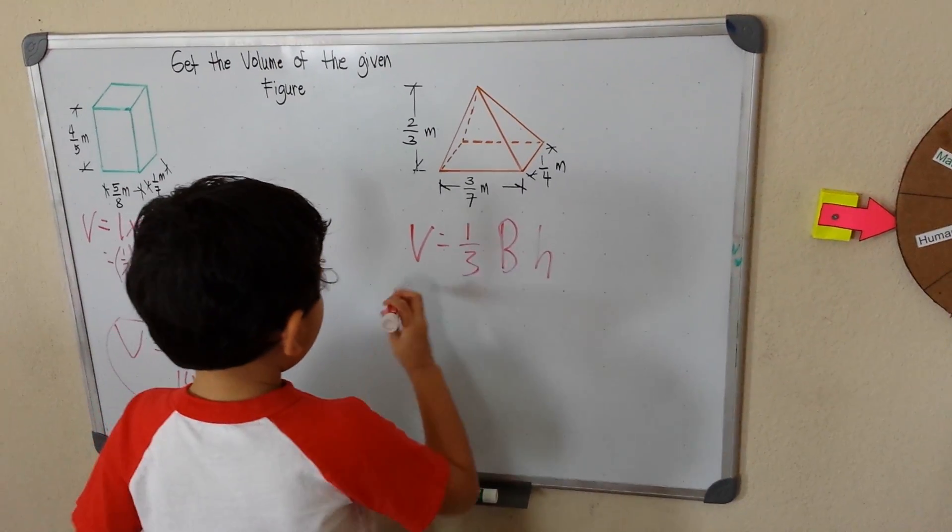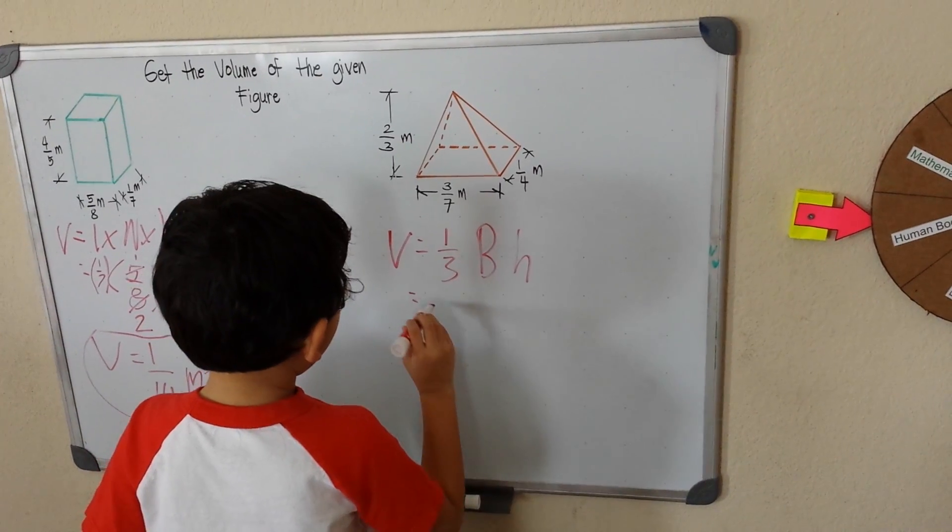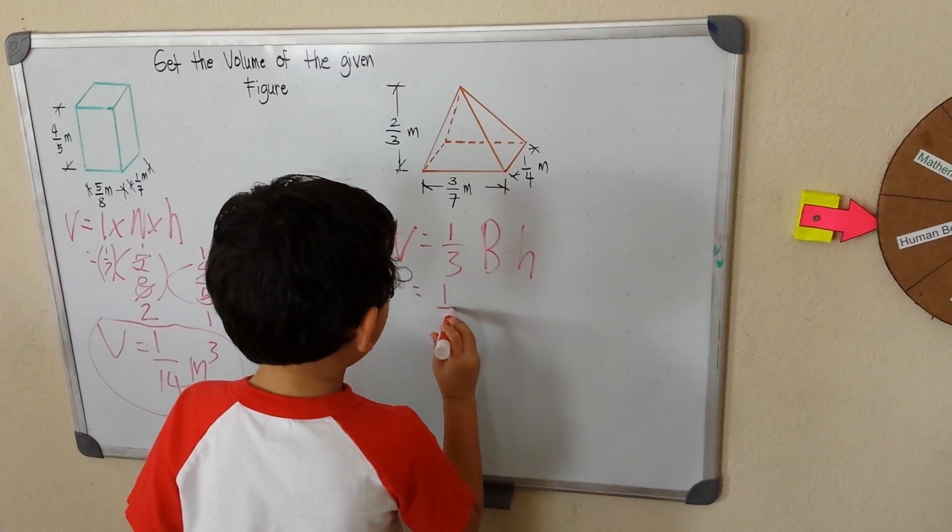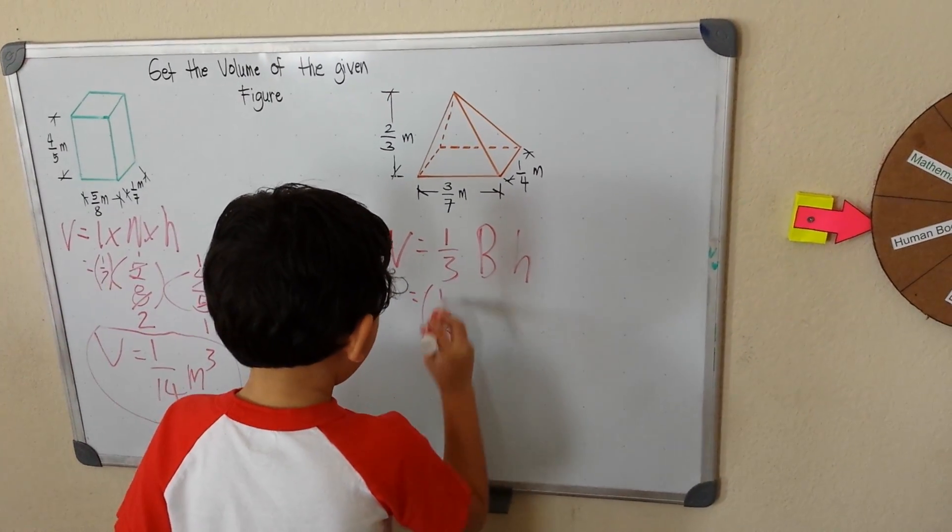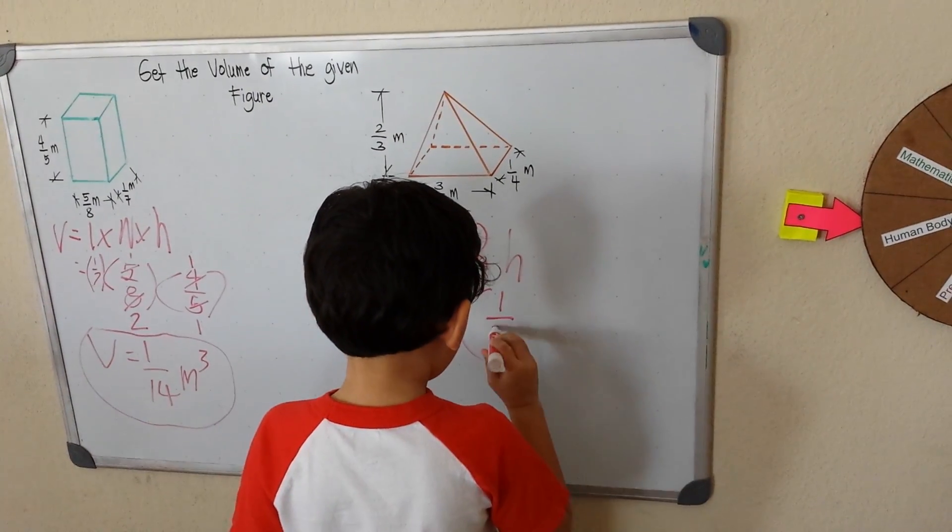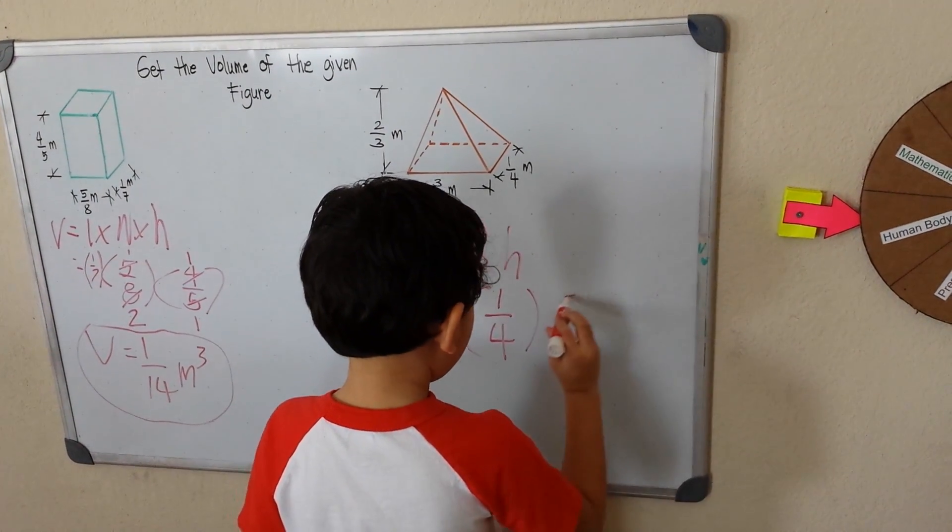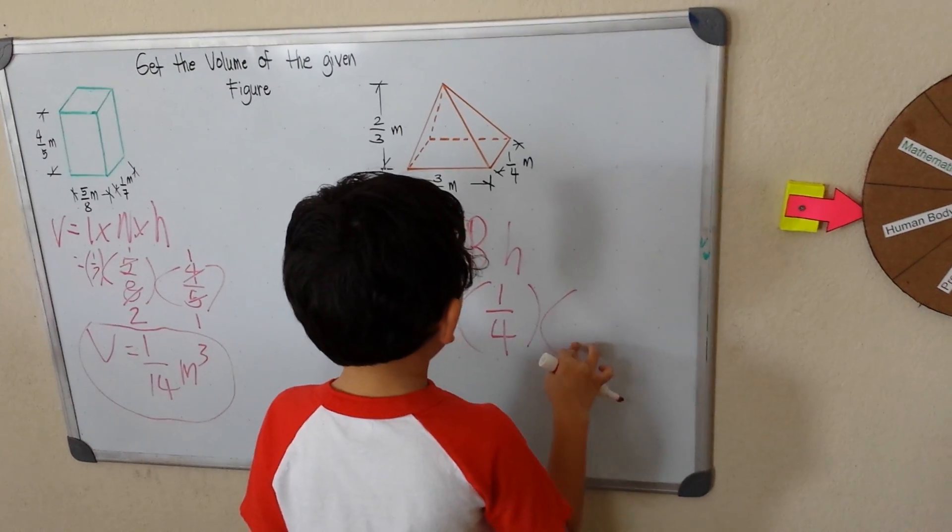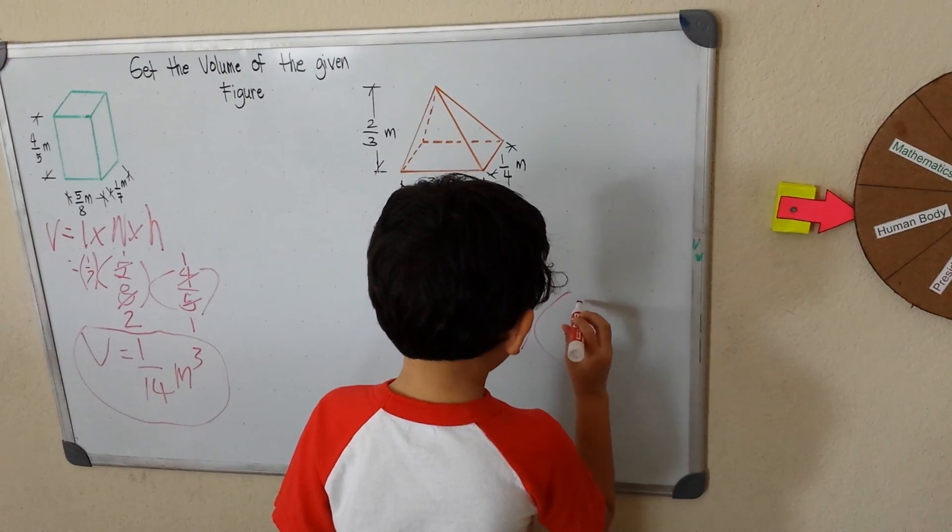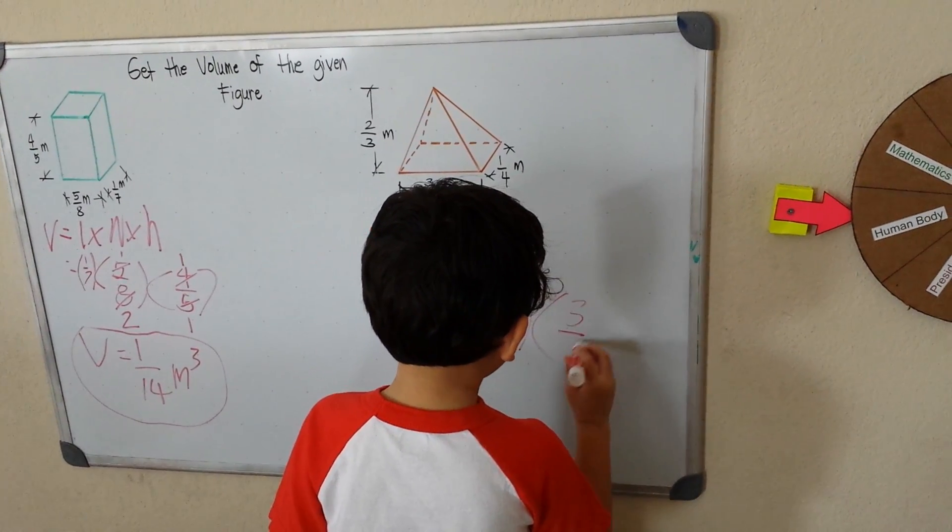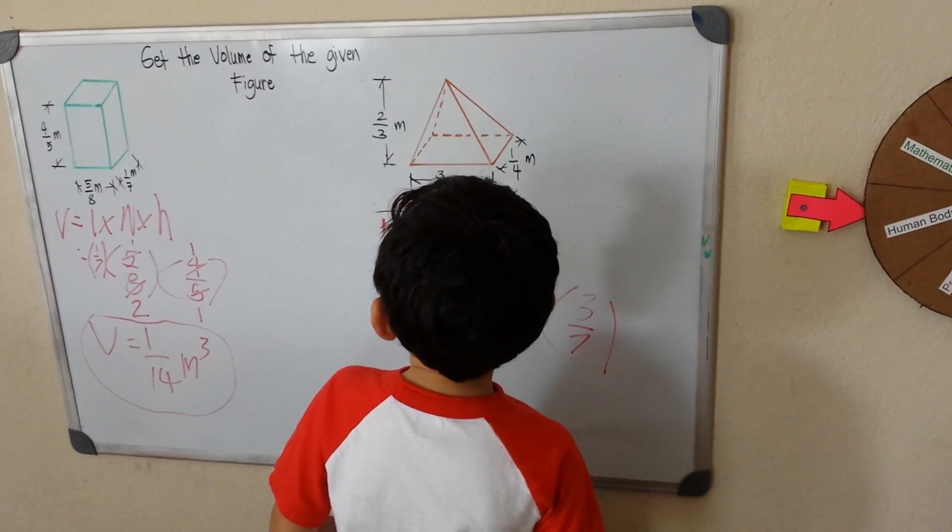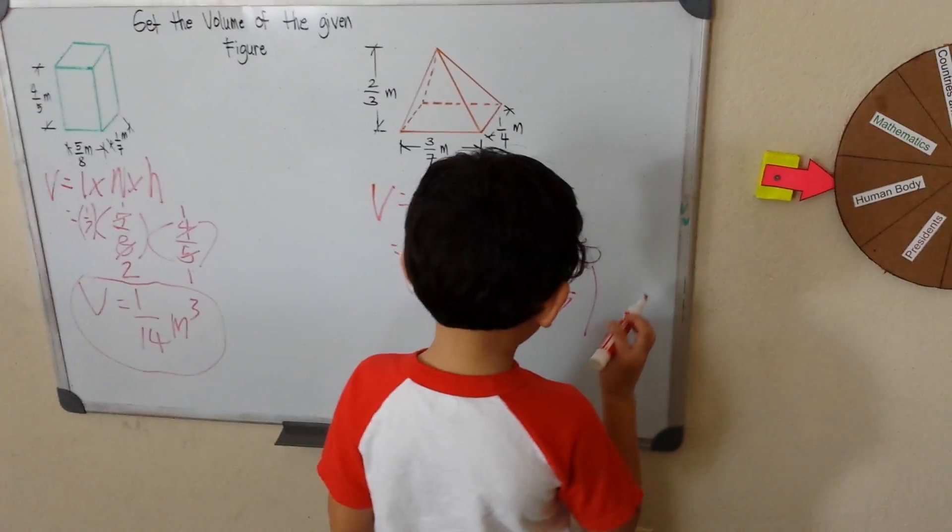We have here 1/3, times 1/4, and then times 3/7, and then 2/4.